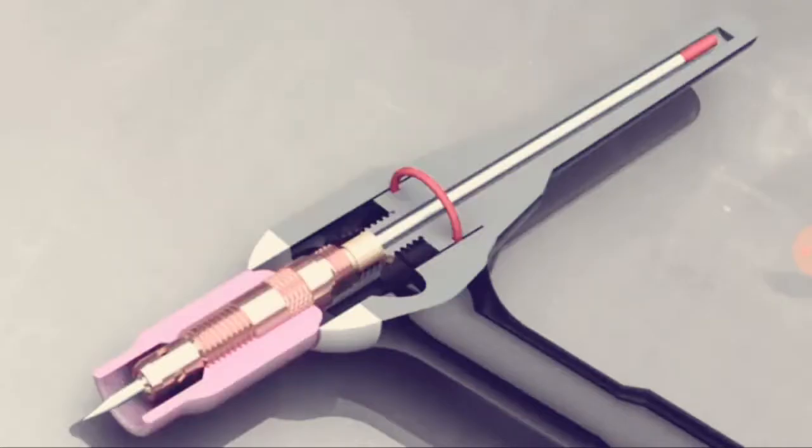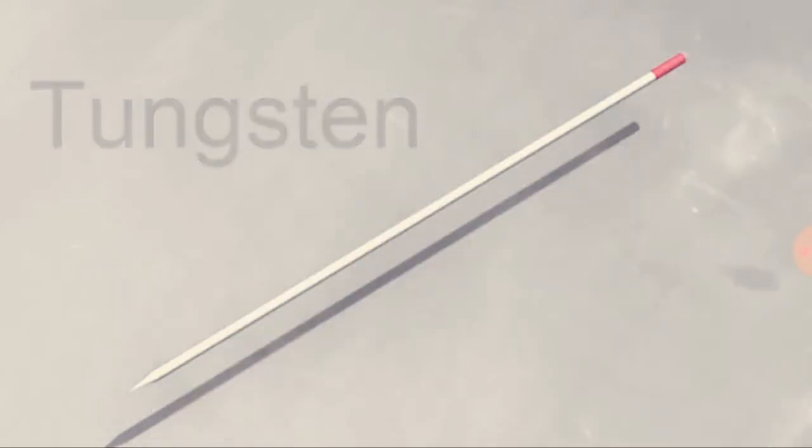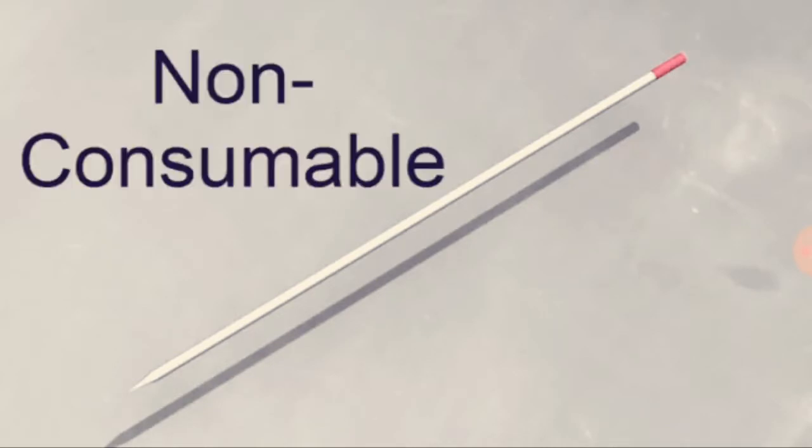TIG welding uses a tungsten electrode. Tungsten has an extremely high melting point. When you TIG weld, the electrode gets hot, but it doesn't melt. We say that it's a non-consumable electrode. That doesn't mean it lasts forever. That just means that it doesn't melt and become part of the weld.